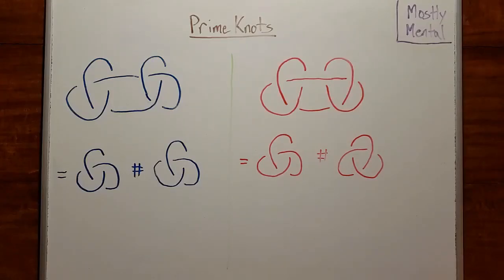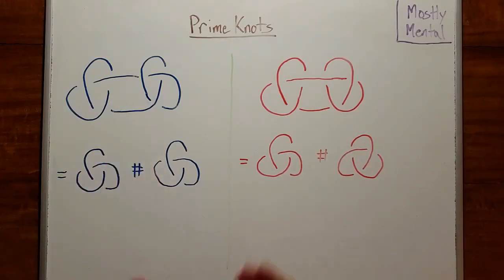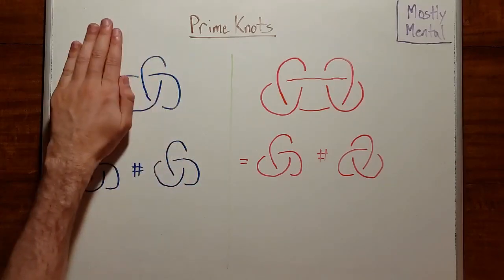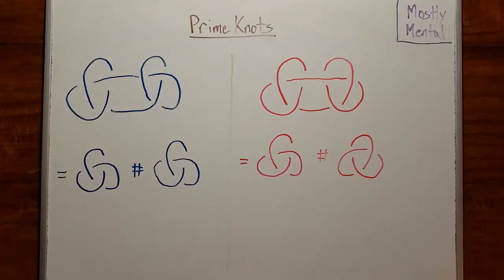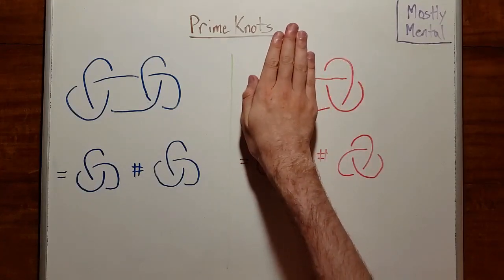Let's take a look at one last example. Say we have these two knots, the granny and the square knot. What primes are they made of? Well, if we break them down the middle, we see that the granny is made of a trefoil and a trefoil. And if we break the square knot, we see it's made of a trefoil and a trefoil.